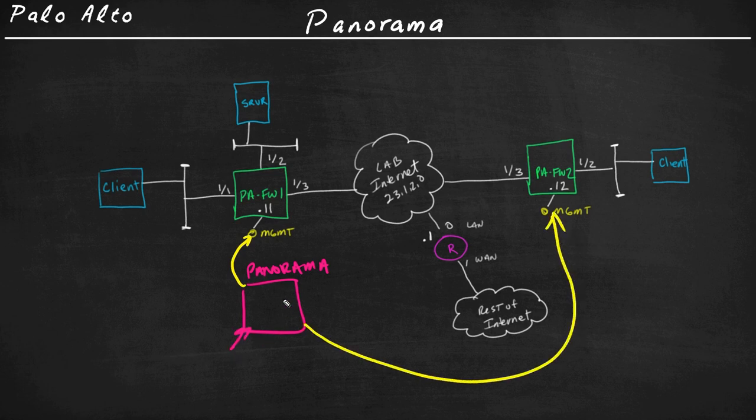There's some major benefits of having this device, this Panorama system, be in charge of the firewalls for us. One is it's centralized. So we can set up role-based access control, very similar to what we did on the local firewalls, and we can apply that concept to Panorama. We can have individual users which are constrained regarding what they can or can't do.